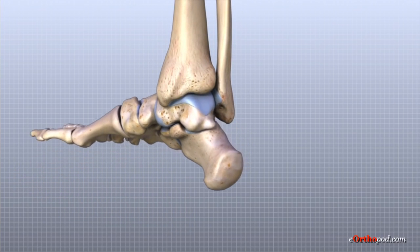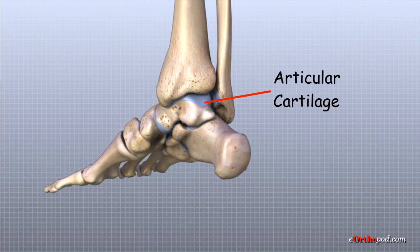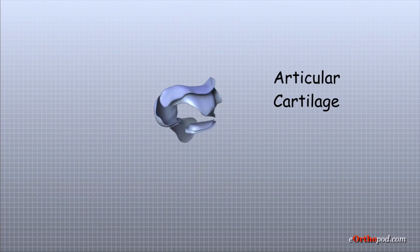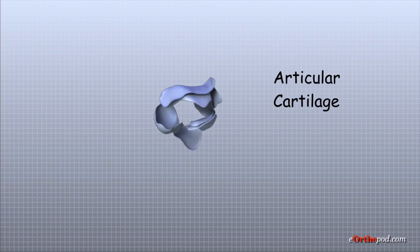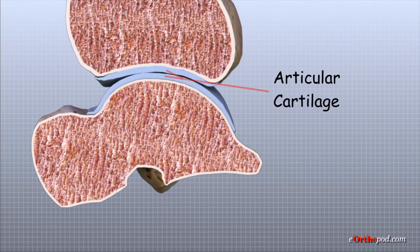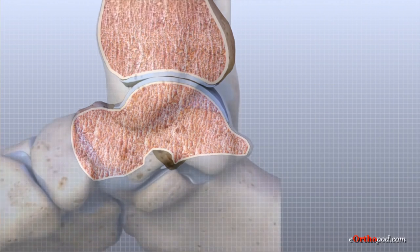Inside the ankle joint, the bones are covered with a slick material called articular cartilage. Articular cartilage allows the bones to move smoothly against one another in the joints of the body. The cartilage lining is about one quarter of an inch thick in most joints that carry body weight, such as the ankle, hip, or knee. It is soft enough to allow for shock absorption, but tough enough to last a lifetime, as long as it is not injured.